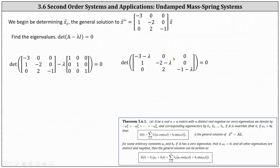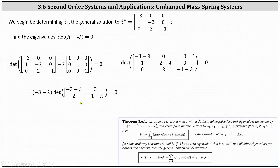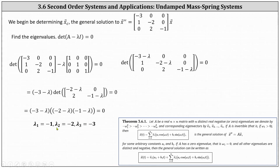To find the determinant, we expand along the first row since it has two zero entries. The determinant equals the entry negative three minus lambda times the determinant of the two-by-two submatrix after deleting row one and column one, giving negative three minus lambda times the determinant with entries negative two minus lambda, zero, two, and negative one minus lambda. Evaluating the two-by-two determinant yields the three factors set equal to zero, giving eigenvalues — listed greatest to least — lambda one equals negative one, lambda two equals negative two, and lambda three equals negative three.